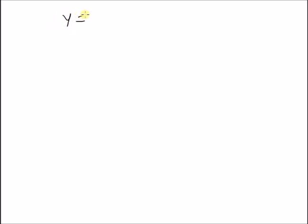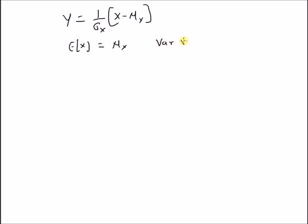Hello, welcome. In this short video let us look at the mean and variance of a standardized random variable. The standardized random variable is given by the linear model y = (1/σx) × (x − μx), where the expectation of x is μx and the variance of x is σ²x. So σx is the standard deviation of the random variable x, and this linear model is also known as a standardized random variable.